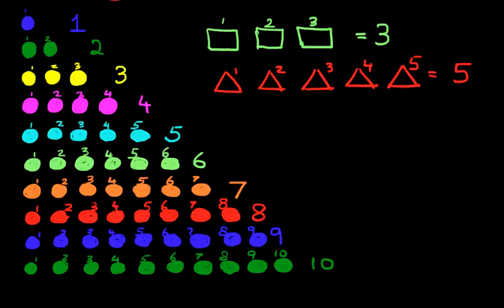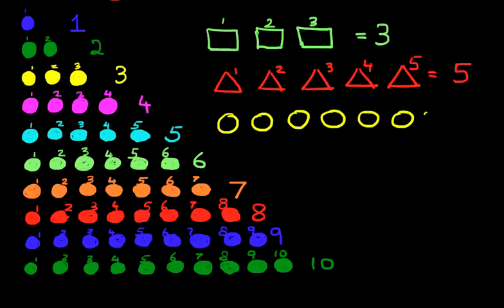Now we're going to work through one final example. How many circles are there? Let's count them. One, two, three, four, five, six, seven. There are seven yellow circles. So it's not just counting balls — you can count squares, rectangles, triangles, circles, cars, coins, anything. Just learn how to count from one up to 10.